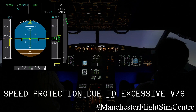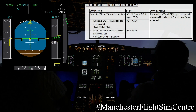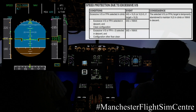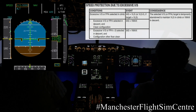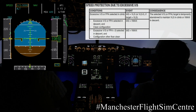Let's take a look at what can happen with speed protections due to an unrealistically high vertical speed demand. We've selected a vertical speed of 5000 feet per minute, which is very unrealistic. As we reach VLS, the selected vertical speed will start to pulse and the aircraft will pitch down to hold VLS. There we are — it's maintaining a quite steady 2000 feet per minute climb.